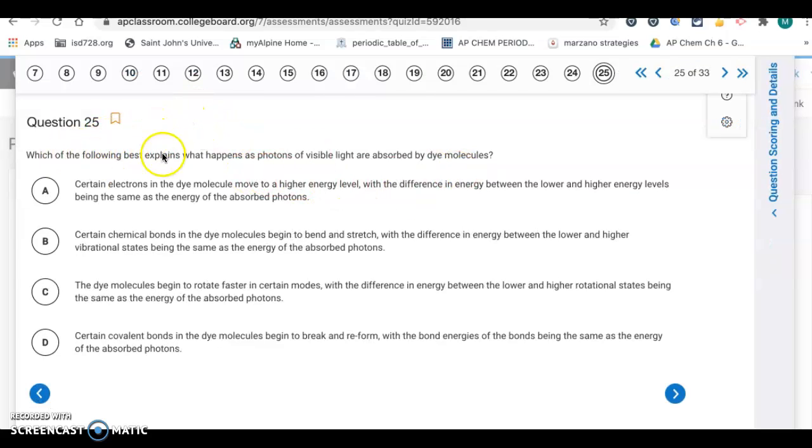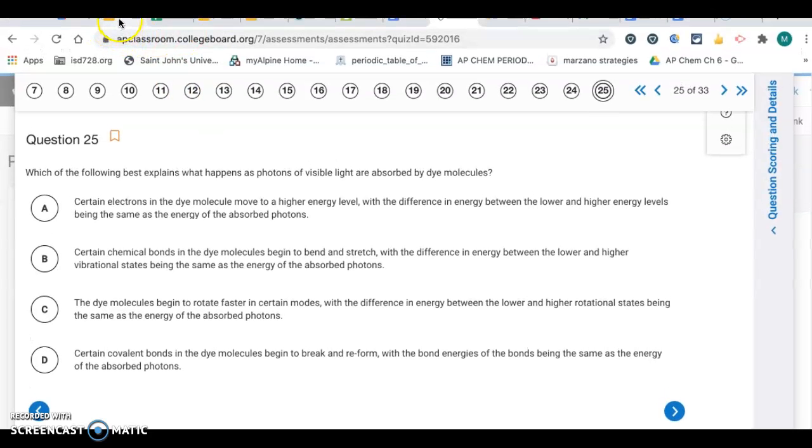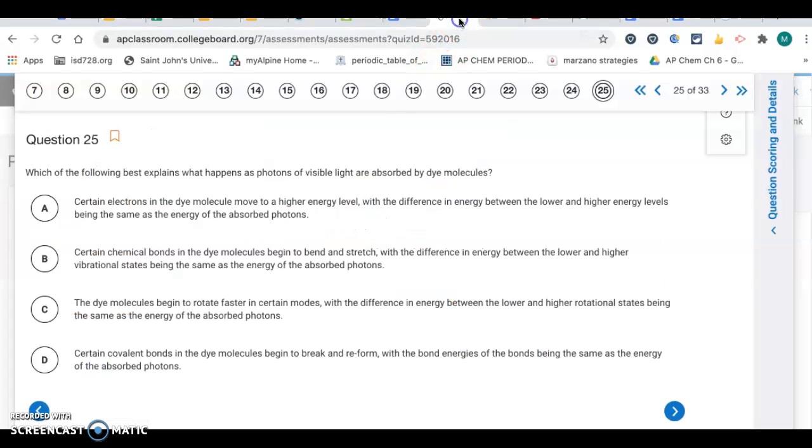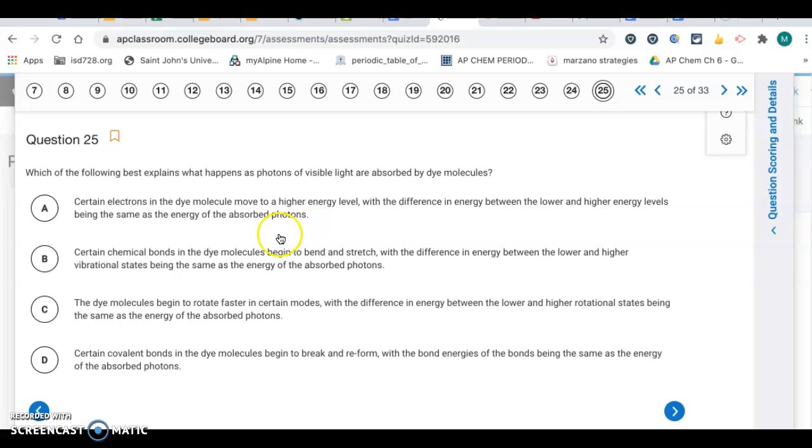Question 25. Which of the following best explains what happens as photons of visible light are absorbed by dye molecules? This question is referring to this part of the 3.11 notes. It's talking about visible light being absorbed. If we absorb visible radiation, it's associated with transitioning electronic energy levels. We want to look for the answer referring to energy levels. Certain electrons in the dye molecules move to a higher energy level, so that's the one we want to pick.